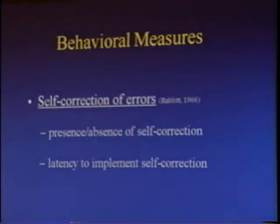Response monitoring has a long history — back in 1966, researchers identified behavioral ways of looking at it: specifically, what a subject does after they've made an error. Is there a presence or absence of self-correction, and what is the latency to implement that self-correction? Imagine you're doing a task and you've made an error — if you're good at response monitoring, your reaction time on the subsequent trial is probably going to be slower. The task commonly used for this is called a flanker task.